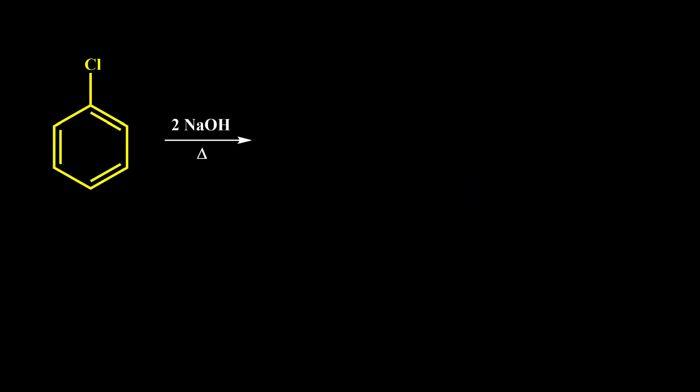I'm going to explain the elimination-addition mechanism and benzyne intermediate. By this example, we know that if we have an electron-withdrawing group on the ortho and para positions, addition of OH to this carbon and elimination of chlorine happens easily. This mechanism is addition-elimination.